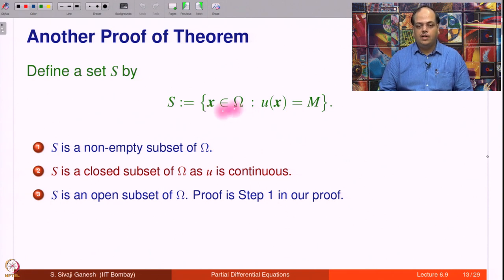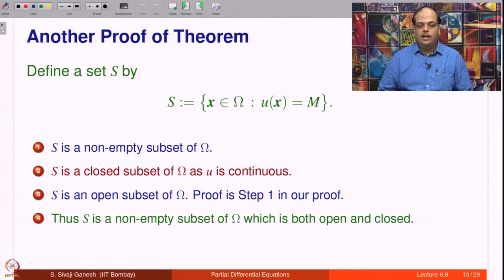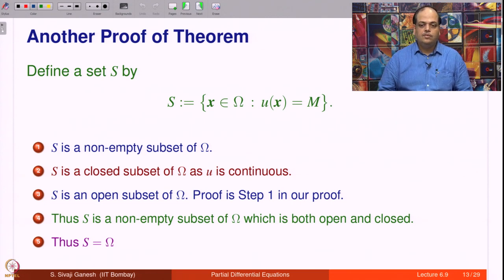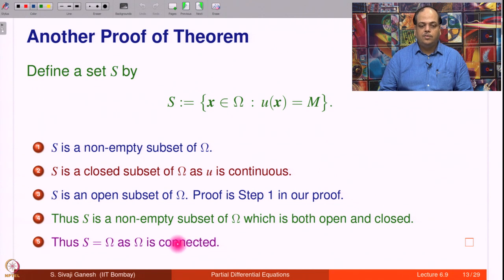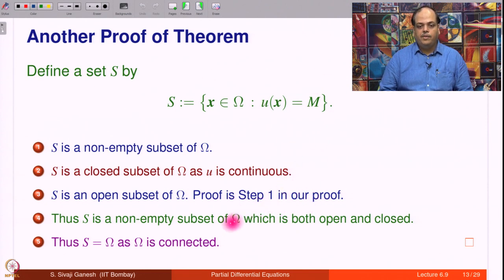We have a set S which is non-empty, open, and closed as a subset of the connected open set omega. By the connectedness of omega, any subset that is both non-empty and open-and-closed must equal the whole set. Therefore S = omega, meaning u ≡ M on all of omega. This alternative proof uses step 1 for openness and appeals to connectedness, essentially replacing the explicit continuation argument of step 2.